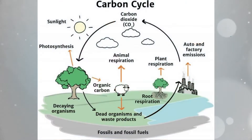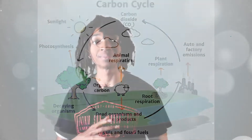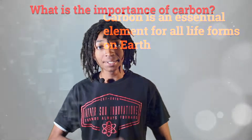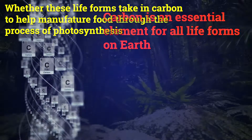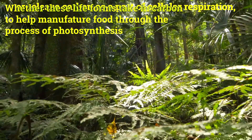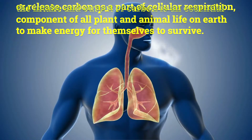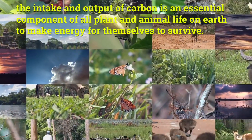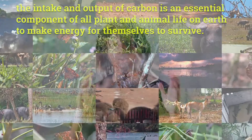All life on earth contains carbon, and carbon is constantly moving from one part of the planet to another through a process called the carbon cycle. So what is the importance of carbon? Carbon is an essential element for all life forms on earth, whether these life forms take in carbon to help manufacture food through photosynthesis, or use carbon as part of cellular respiration. The intake and output of carbon is essential for all plant and animal life on earth to make energy to survive.